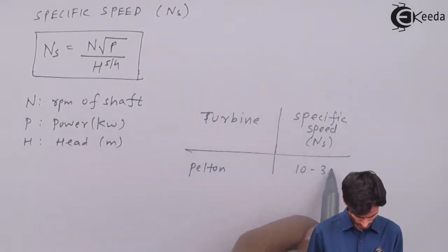Since diameter and RPM are known, we calculate blade velocity u = πDN/60. Next, we calculate the velocity of the jet. Since the angle of deflection given is 165°, the vane angle at the tip, φ = 180° − 165° = 15°.